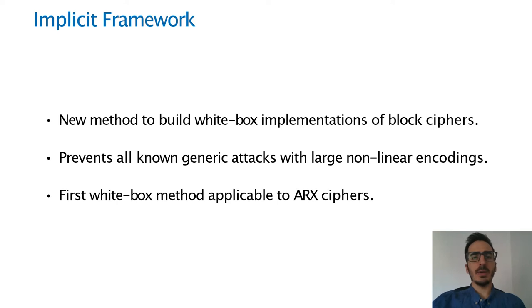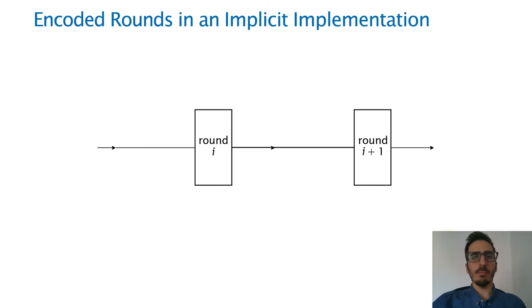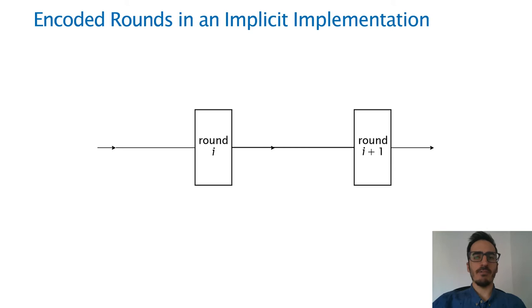Not only that, but our method is also the first one that can be applied to ARX ciphers — ciphers that use the modular addition as the nonlinear layer. To achieve practical implementations with large nonlinear encodings, the round encodings in an implicit implementation are built carefully as the composition of affine permutations and affine nonlinear self-equivalences.